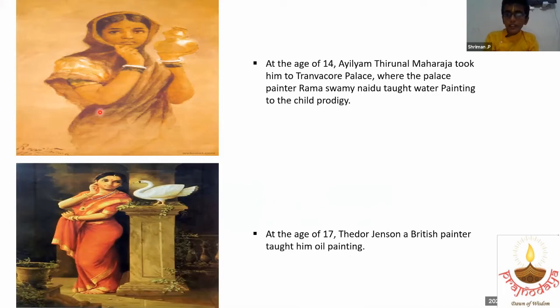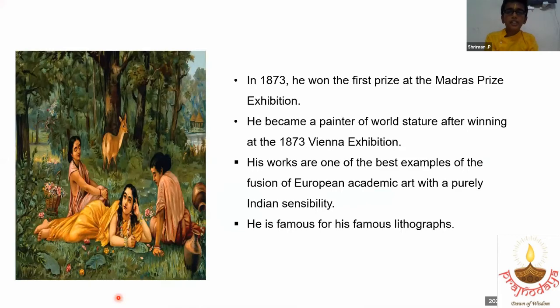At the age of 17, Tedder Jensen, a British painter, taught him oil painting. And this is the oil painting he drew. In 1873, he won the first prize at the Madras prize exhibition.